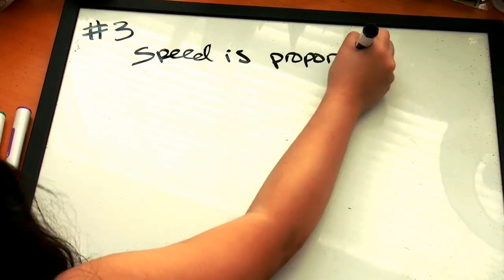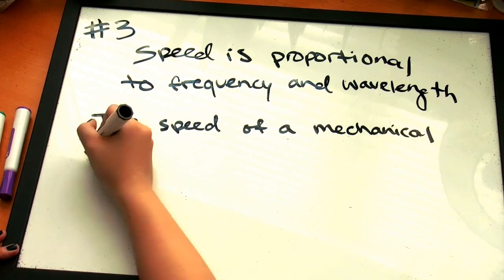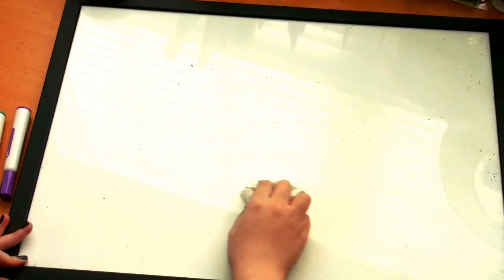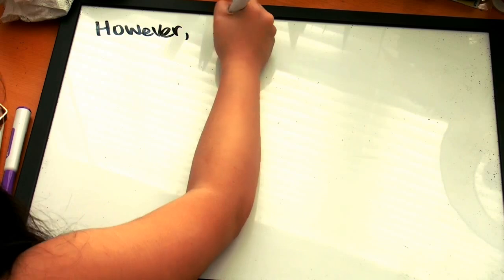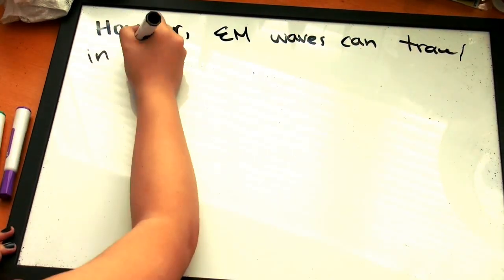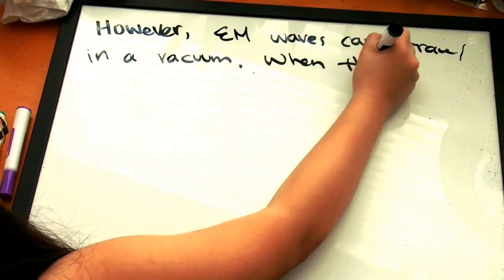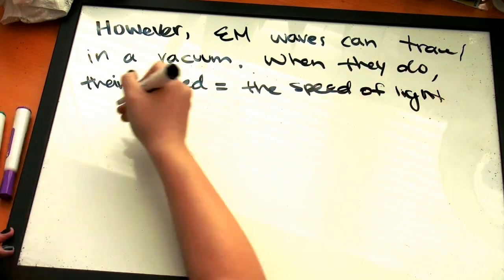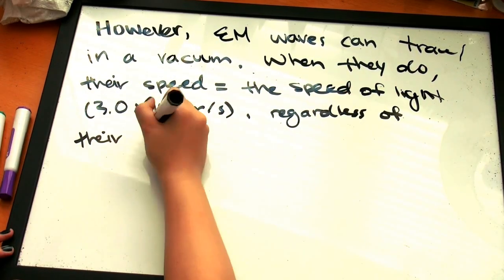Number three, speed is proportional to frequency and wavelength. The speed of a mechanical wave depends on the medium and the type of wave. However, electromagnetic waves are capable of being in a vacuum. When they are in a vacuum, all electromagnetic waves move at the speed of light, regardless of their type. So yes, that means that radio waves and gamma waves travel at the same speed in a vacuum.